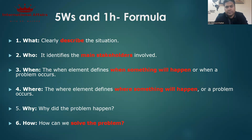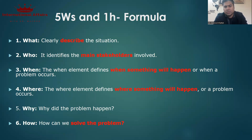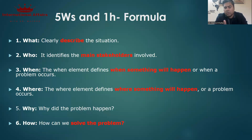These are the Five W's and One H formula. The first W — What — means clearly describe the situation precisely. The second W — Who — identifies the main stakeholders involved. For Afghanistan, the main stakeholders are the Afghan Taliban, Pakistan, Iran, India, Russia, China, and America. The third W — When — defines when the problem occurs; in this case, the post-2021 situation.